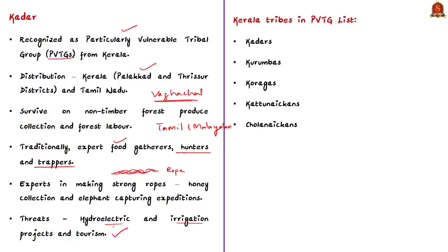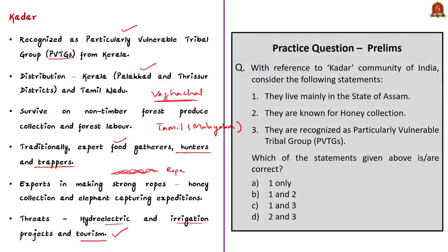Tourism near their settlements is also another threat to their social life. With this information, let's take up the question. Three statements are given with reference to the Kader community of India. The first statement says they live mainly in the state of Assam — this is incorrect, as the Kader community mainly resides in Kerala. The remaining second and third statements — that they are known for honey collection and are recognized as Particularly Vulnerable Tribal Groups — are correct. Therefore, the correct answer is option D, 2 and 3.